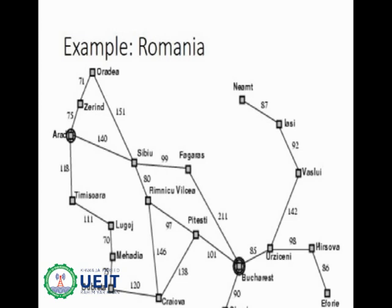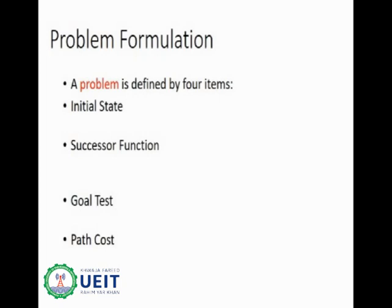This figure shows the road map of a part of Romania. The problem is to travel from Arad to Bucharest in a day. For the agent, the goal will be to reach Bucharest. Paths and actions that don't allow the agent to reach Bucharest on time will be rejected without further consideration. This simplifies the agent's decision problem. Before jumping into finding the algorithm, we first need to define and formulate the problem.